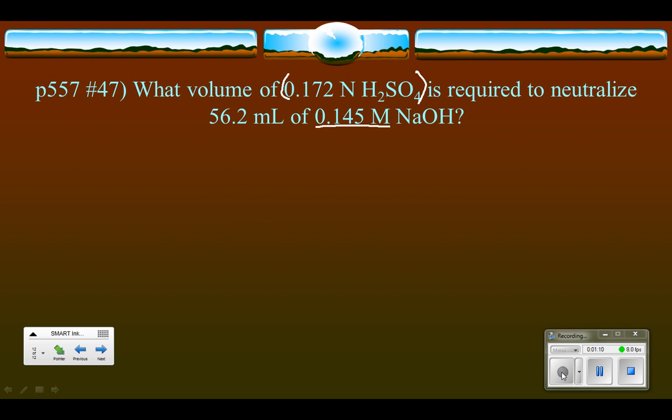But that's no big deal because if we are going to change from molarity to normality, remember that you just multiply the molarity times the number of hydroxides in the case of a base. So that is 1 OH.